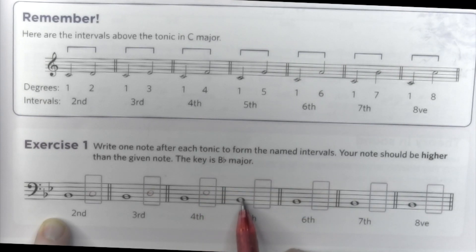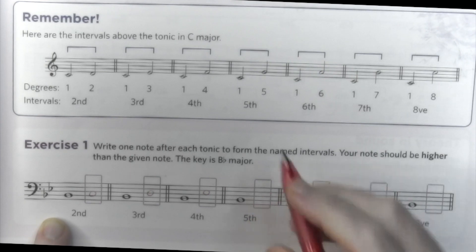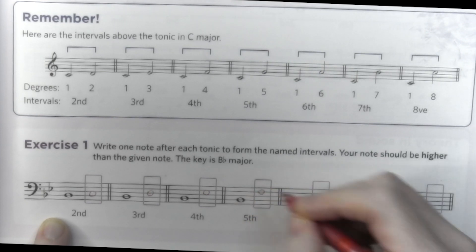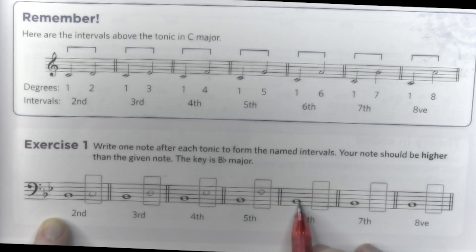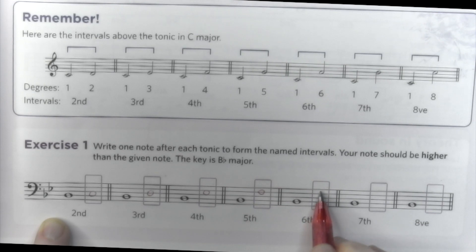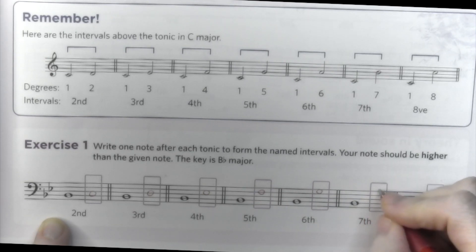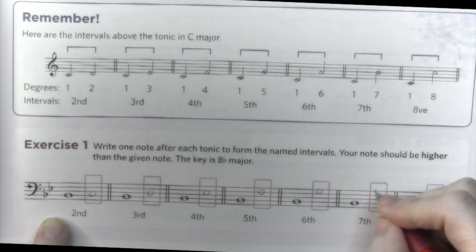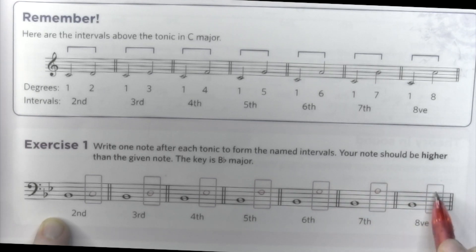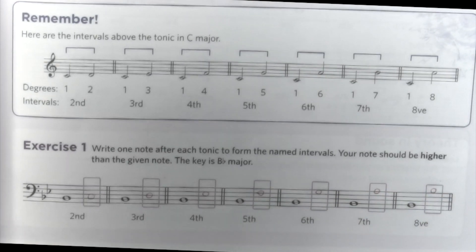A fifth: one, two, three, four, five. And a sixth. The seventh: one, two, three, four, five, six, and seven. And the octave is an octave higher — B flat, B flat.